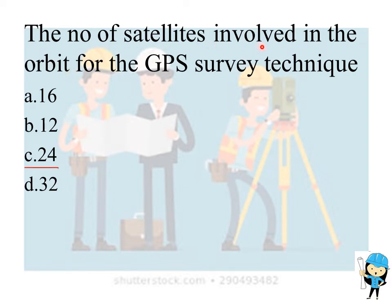The number of satellites involved in the orbit for the GPS survey technique is 24, and the minimum number of satellites required is only 4.